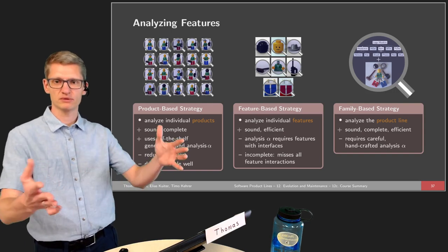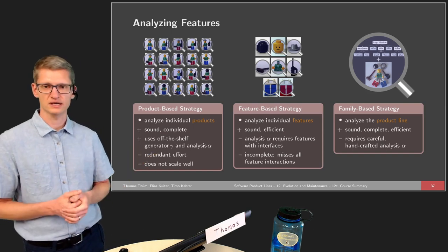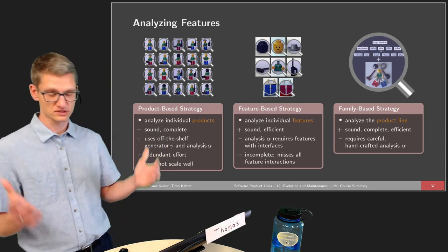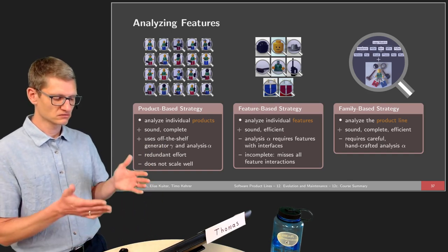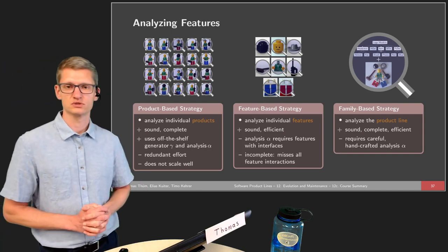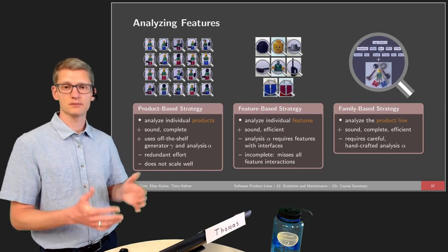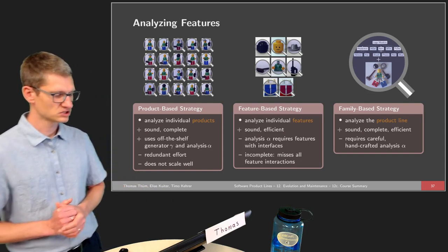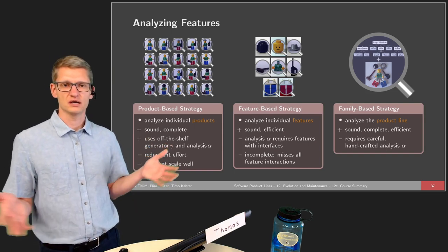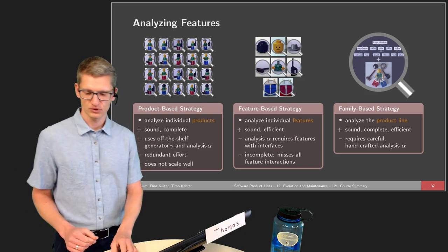We can make use of this when analyzing features. We looked at static analysis of variability: the product-based strategy, where we simply generate products and use off-the-shelf tools to analyze them — for instance, generating Java programs from a Java product line and then compiling them. Then we have the feature-based strategy, where we analyze individual features in isolation, such as plugins for a framework. And we looked at the family-based strategy — how to find and detect type errors and certain kinds of dead code without needing to generate particular configurations or products of the product line.